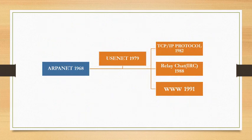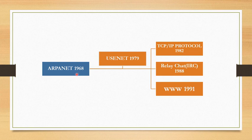ARPANET was the first large-scale internet, created in 1968 by the United States Defense Department's Advanced Research Projects Agency, known as DARPA. The updated version of the internet came in 1979.